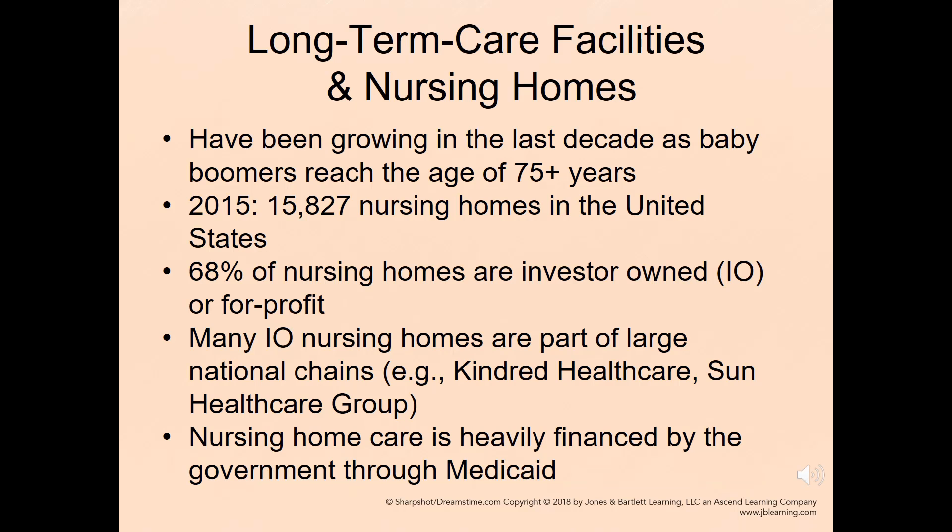Long-term care facilities and nursing homes have been growing in the last decade as baby boomers reach 75-plus years of age. In 2015, there were 15,827 nursing homes in the United States, of which 68% are investor-owned or for-profit. Many investor-owned nursing homes are part of large national chains such as Kindred Healthcare or Sun Healthcare Group, and nursing home care is heavily financed by the government through Medicaid.